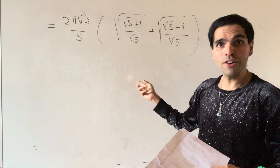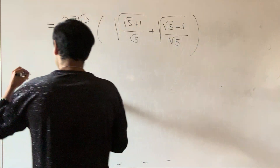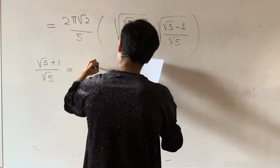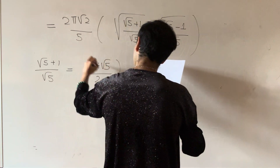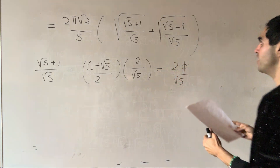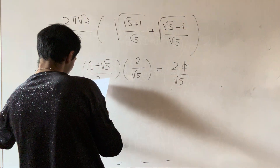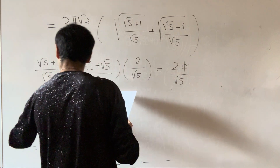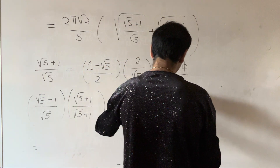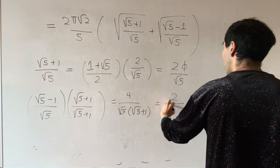We can simplify further because this is a golden integral, and we can write it in terms of the golden ratio. Square root of five plus one over square root of five equals one plus square root of five over two times two over square root of five, which is two times the golden ratio over square root of five. For the other term, square root of five minus one over square root of five — multiply top and bottom by square root of five plus one — and you get four over square root of five times square root of five plus one, which can be written as one over the golden ratio.